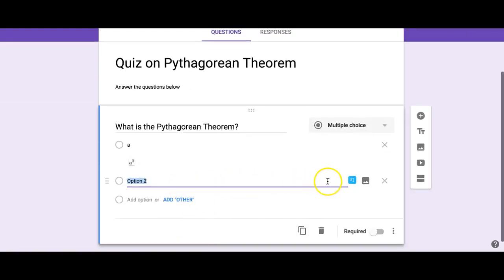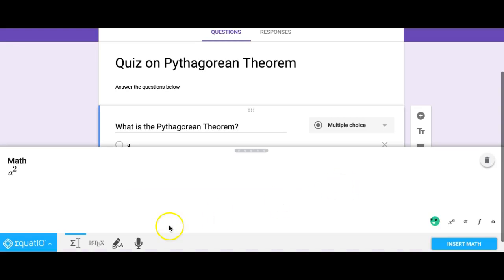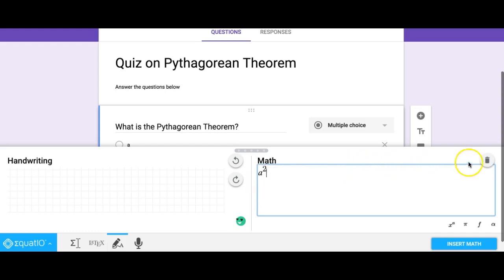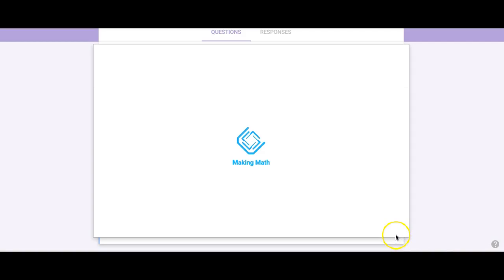If I want to put in some different options, I can click on insert math and I can actually handwrite it and it will recognize what I'm writing. So for example, maybe I want to get rid of that and try and write a² + b² = c², and then it's got the theorem there and I can click on insert math.